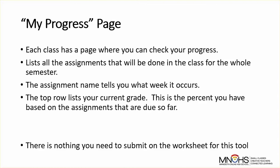Now let's look at the My Progress page. Each class will have a page where you can see how you're doing on the assignments. This is going to list all the assignments for the whole semester, not just the ones you should have completed already. The assignment name tells you what week it occurs, which will help you stay organized. The top row lists your current grade — this tells you what percentage you have based on all the work you should have done so far.